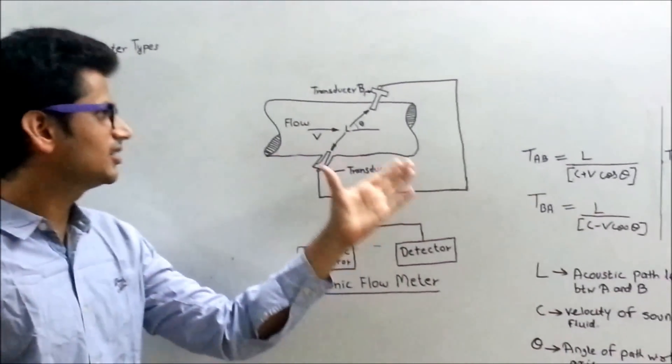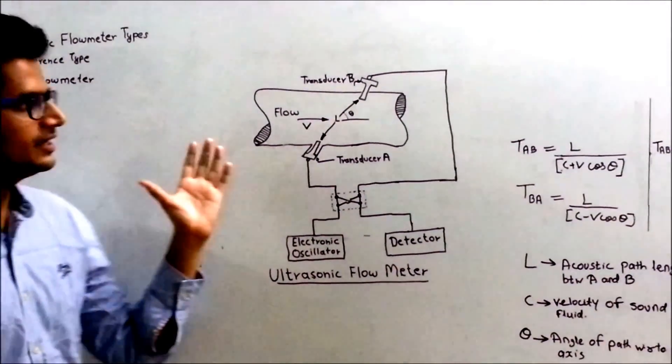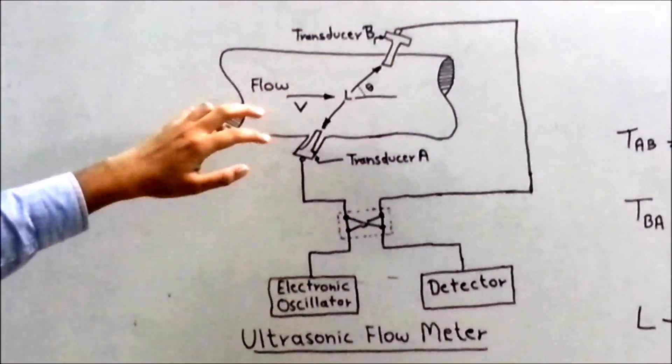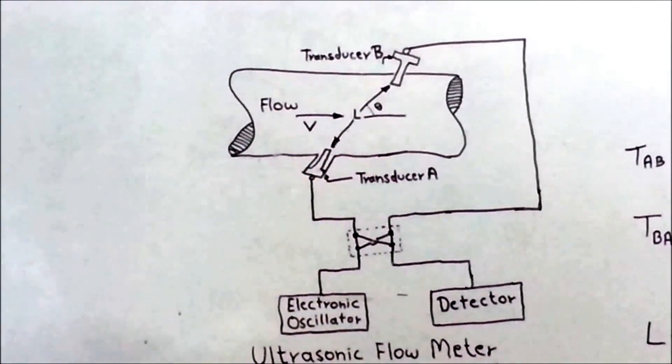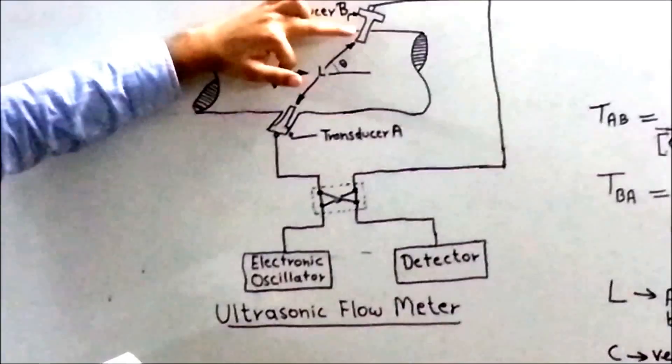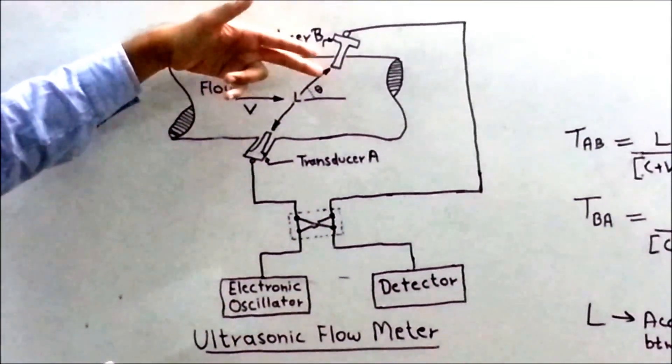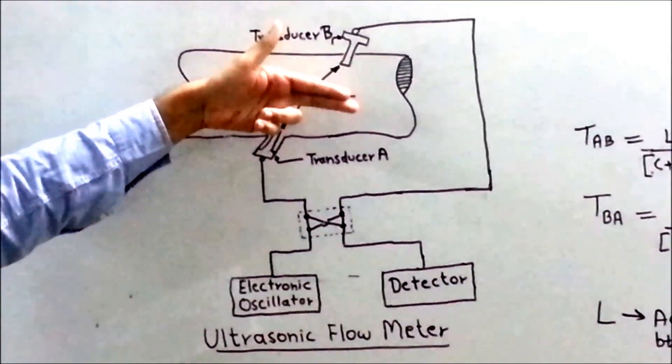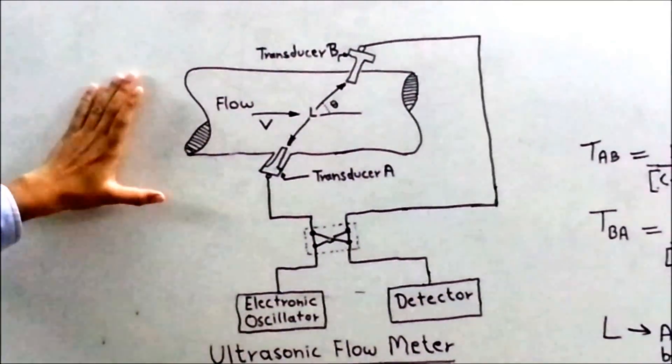As you can see, this is the setup of Ultrasonic Flowometer and its operating principle is based on Time Difference Type. This device measures flow by measuring the time taken for ultrasonic wave to transfer a pipe section both with and against the flow of liquid within the pipe. This was the working principle.